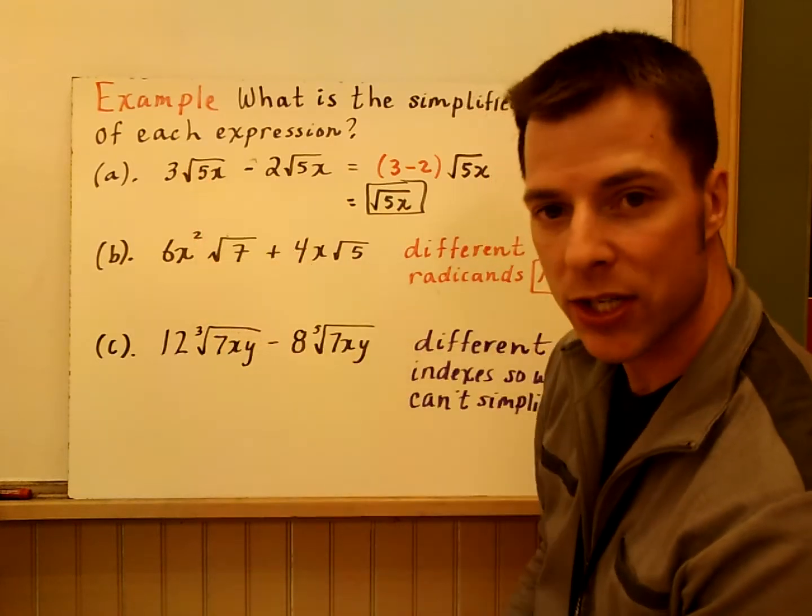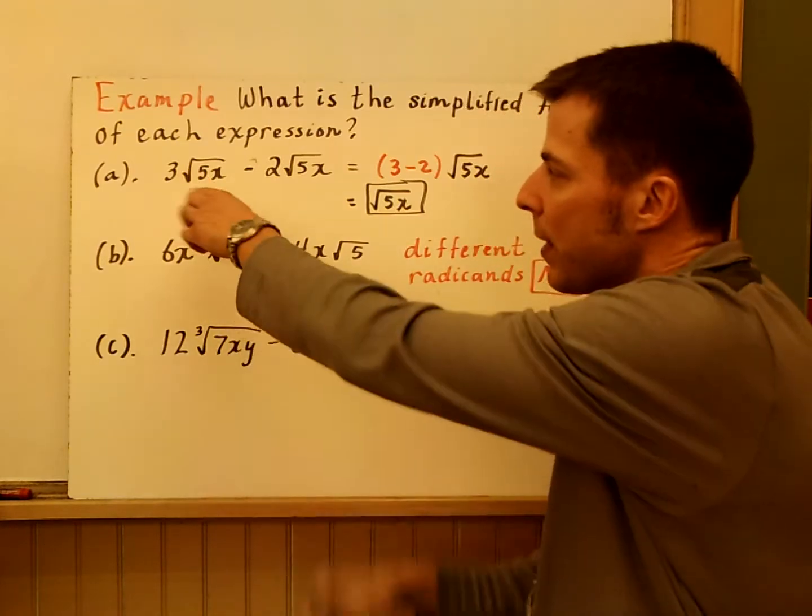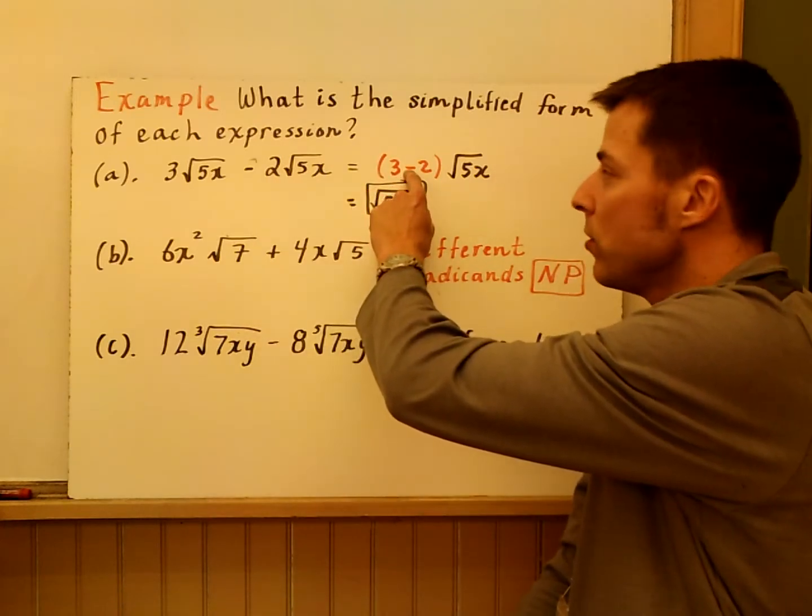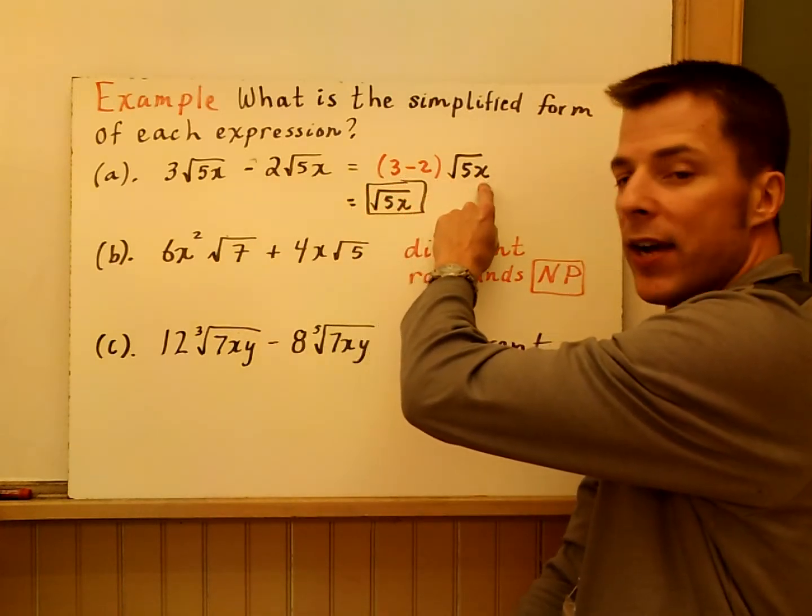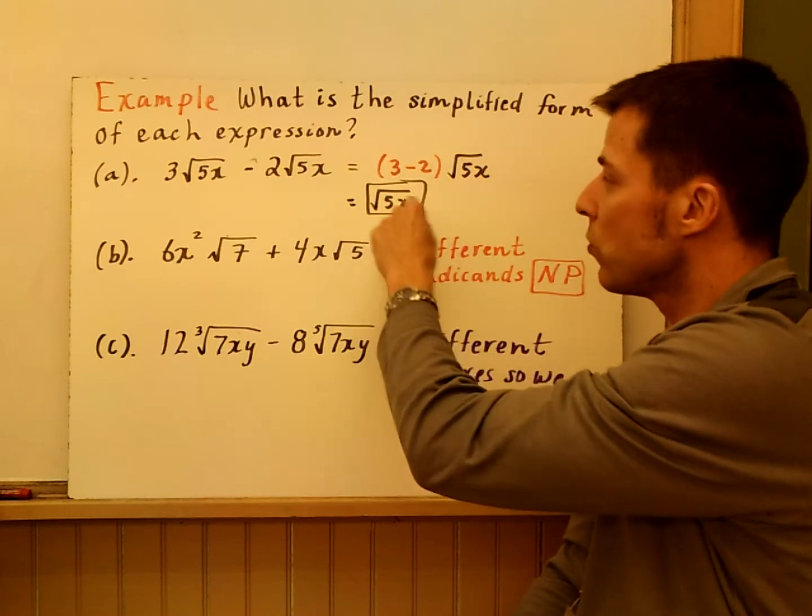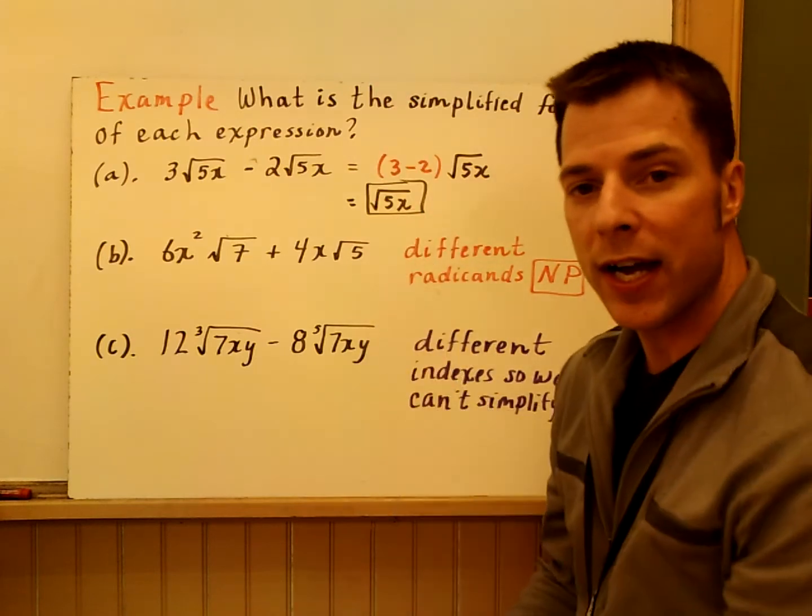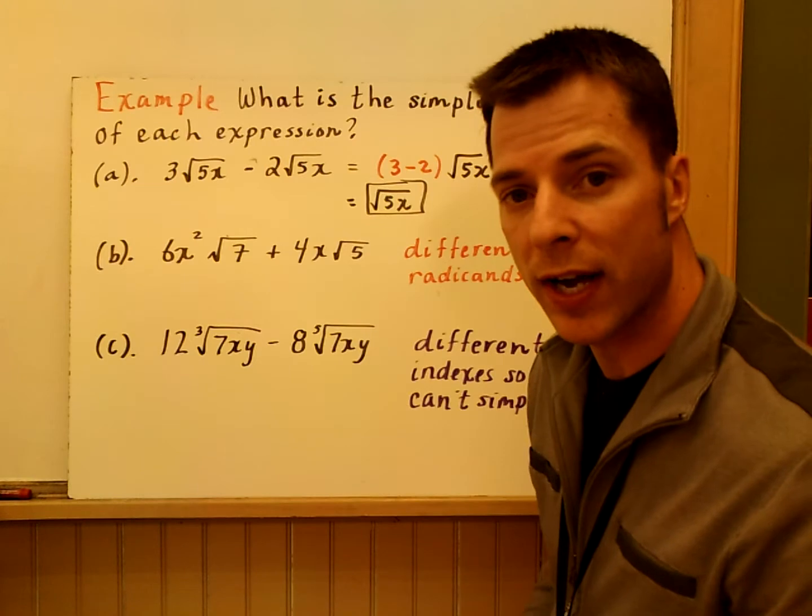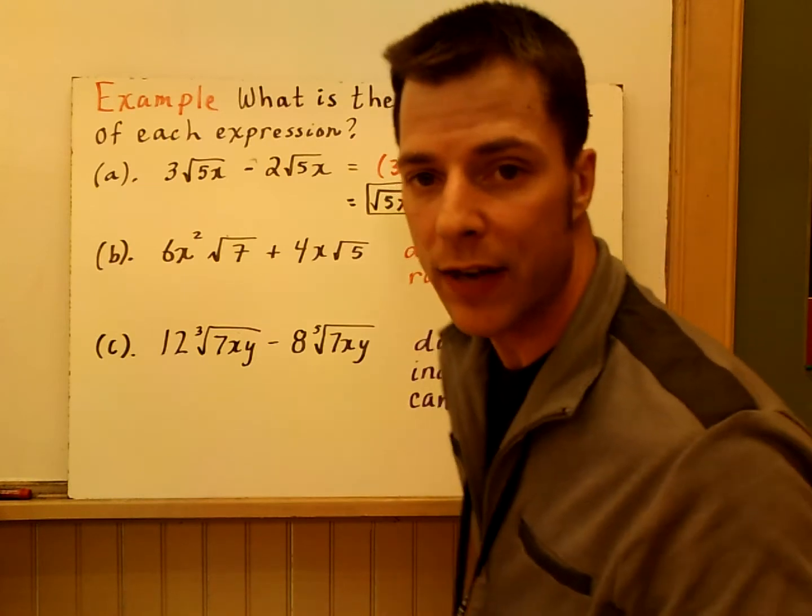They have the same radicand and index, which is 2. Combine them. You have the quantity 3 minus 2 times root of 5x. 3 minus 2 obviously is 1. That's just times root 5x. The answer is root 5x or the square root of 5x.